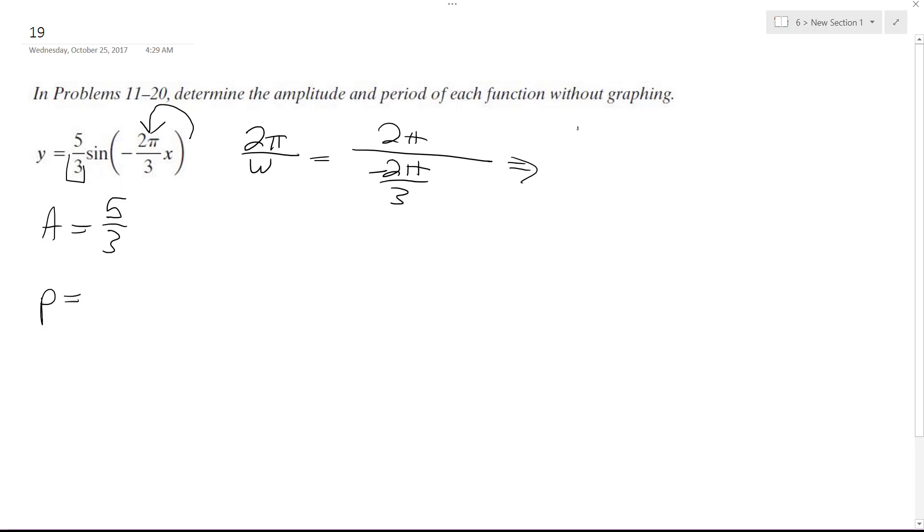So I bring this out in front, so I get 2π over 1 times 3 over negative 2π. These cancel out and I'm left with simply negative 3.